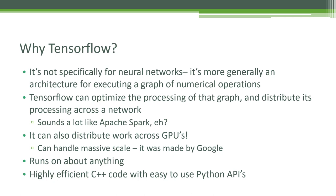TensorFlow is also written in C++ under the hood, which is good, whereas Spark is written in Scala and ultimately runs on top of a JVM. By going down to the C++ level, that gives you greater efficiency with TensorFlow. At the same time, it has a Python interface, so you can talk to it just like any other Python library, making it very easy to program and use as a developer, while being very efficient and fast under the hood.